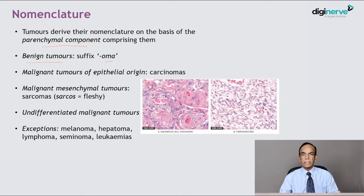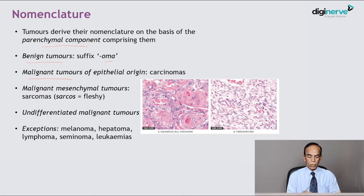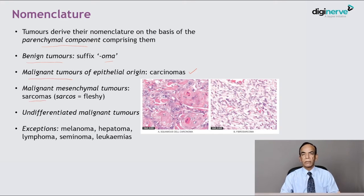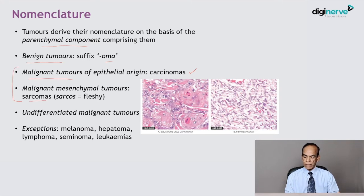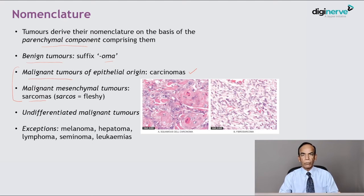OMA is the suffix and the cell of origin is the prefix for benign tumours. Malignant tumours can be of epithelial or mesenchymal origin. Those of epithelial origin are called carcinomas, while malignant mesenchymal tumours are called sarcomas because of their fleshy gross appearance. For example, a squamous cell carcinoma arises from squamous epithelium, and fibrosarcoma is a malignant tumour arising from fibrous tissue.